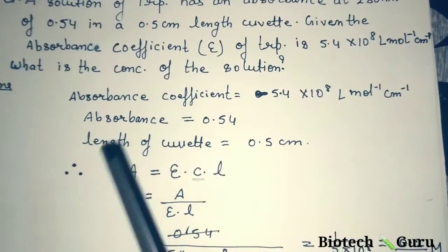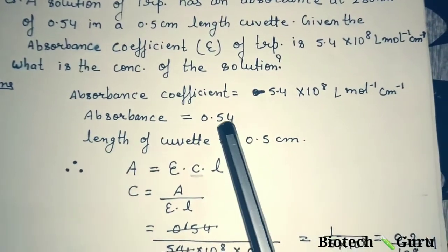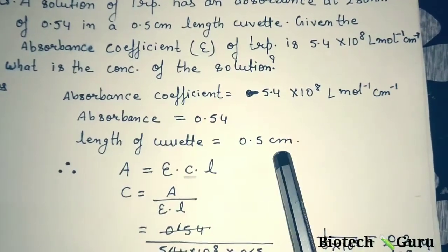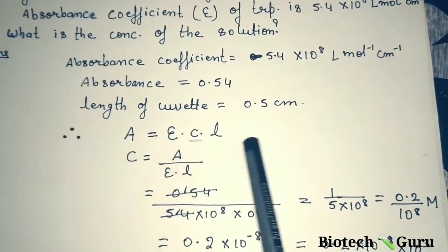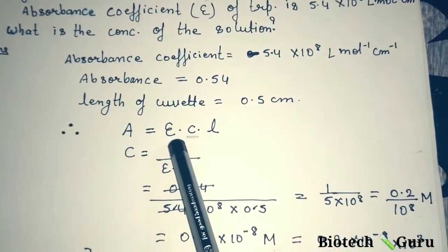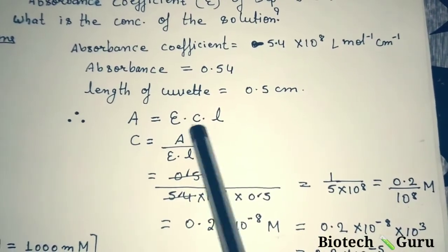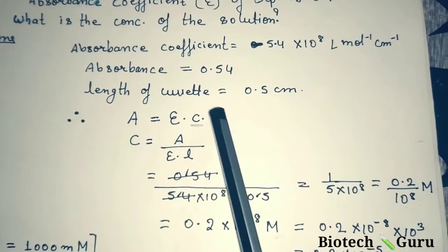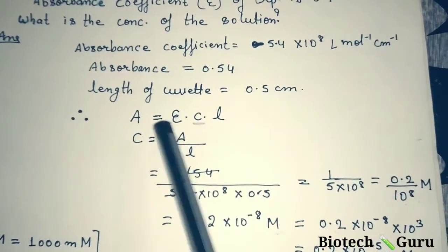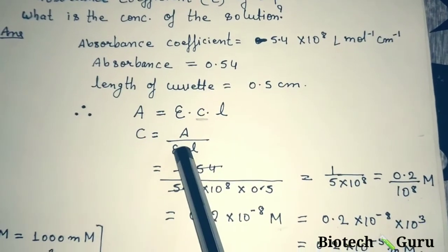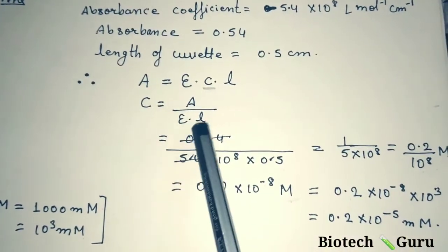First let us write down what is given. Absorbance coefficient (ε) = 5.4 × 10⁸. Absorbance (A) = 0.54. Length of cuvette (l) = 0.5 cm. Now, in the previous video we saw that Lambert-Beer Law gives the formula: Absorbance = absorbance coefficient × concentration × length. We need to find concentration in this question. So if we rearrange the formula, concentration is equal to absorbance divided by epsilon times l (C = A / ε·l).